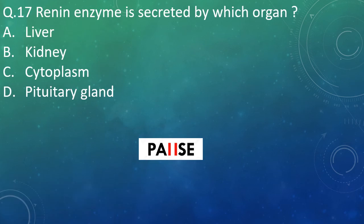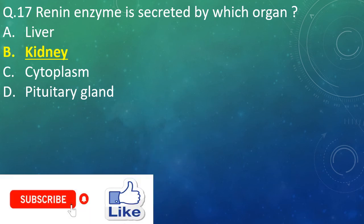Question 17: Renin enzyme is secreted by which organ? Option A: liver. Option B: kidney. Option C: cytoplasm. Option D: pituitary gland. And the right answer is Option B — kidney. So renin enzyme is secreted by the kidney.